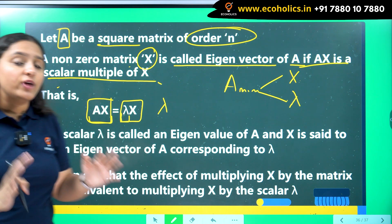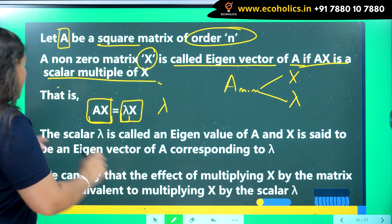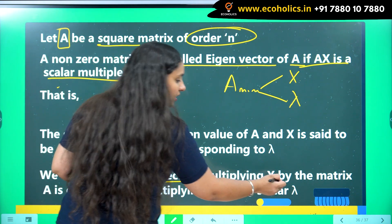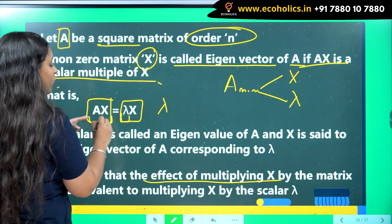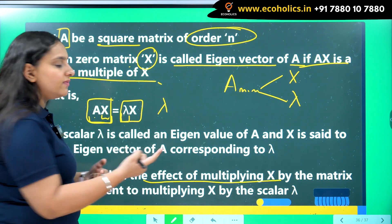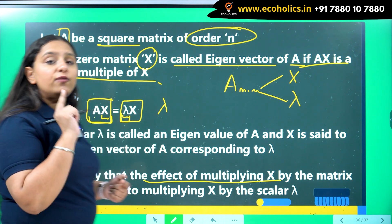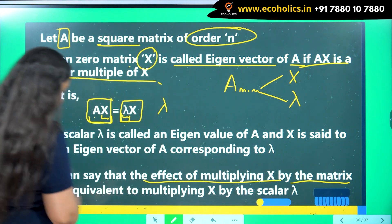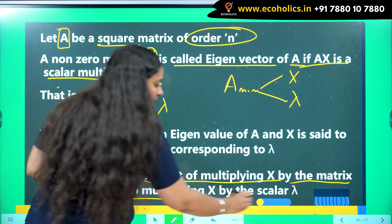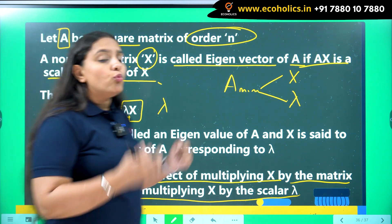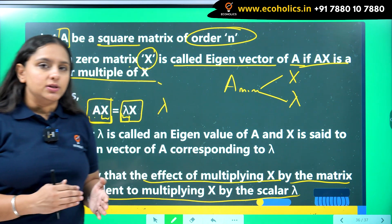So in very simple words, the effect of multiplying X - so when you are multiplying X with A or when you are multiplying X which is your eigenvector with lambda, the effect is same. So the effect of multiplying X by the matrix A is equivalent to multiplying X by the scalar lambda.